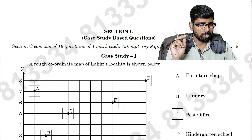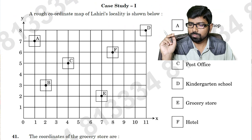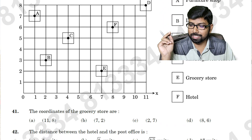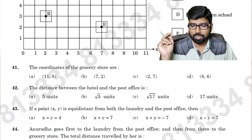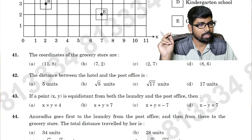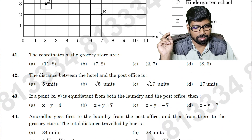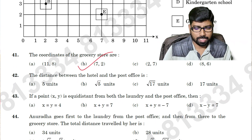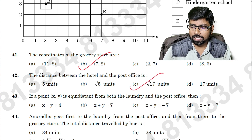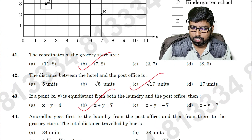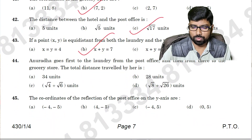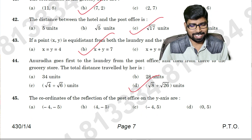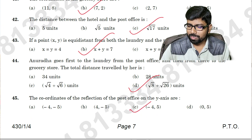Now this is a case study based question — there is a figure here, you can see. Question number 41: option B is the answer. Question number 42: option C is the answer. Question number 43: option B is the answer. Question number 44: option D is the right answer. Question number 45: option C is the right answer.